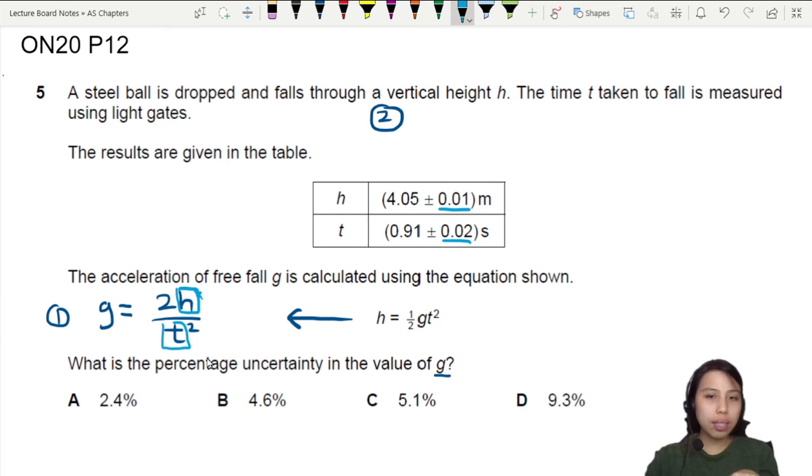But you cannot just add the uncertainty because one is in meter, one is in second. You cannot add meter plus second. One apple plus one banana equals two? Two apple bananas? Cannot. What kind of logic is that? So we need to come up with the equation. Let's use fractional uncertainty.